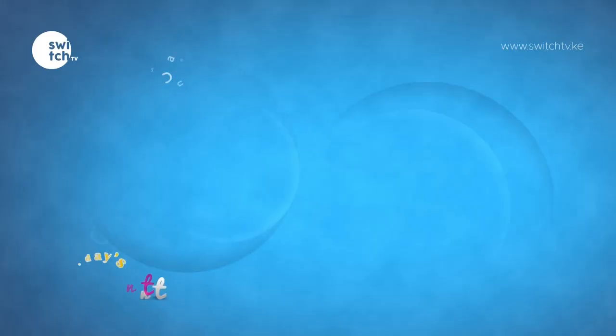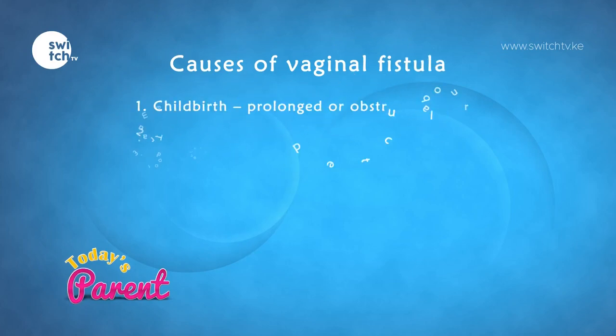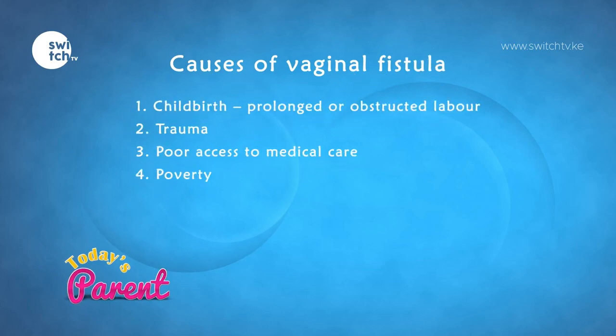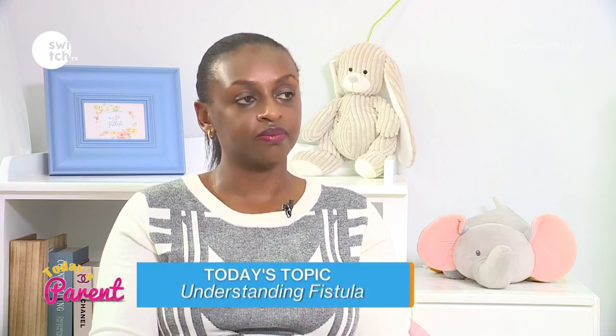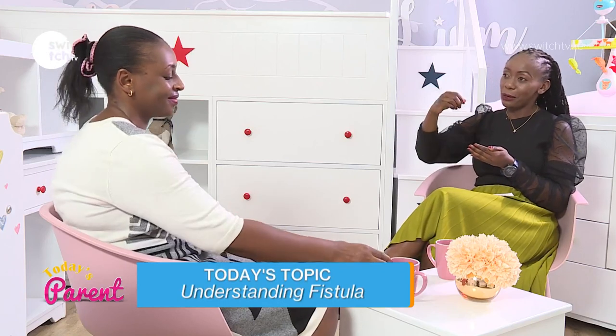Obstetric fistulas are fistulas that happen as a result of childbirth. The most common cause is prolonged or obstructed labor. You could be having obstructed labor — maybe you don't seek care or are delivering at home — and stay in labor for so long that the baby's head keeps pressing on the mother's tissues. That pressing obstructs the blood supply, which leads to the formation of a fistula — a hole forming a communication.